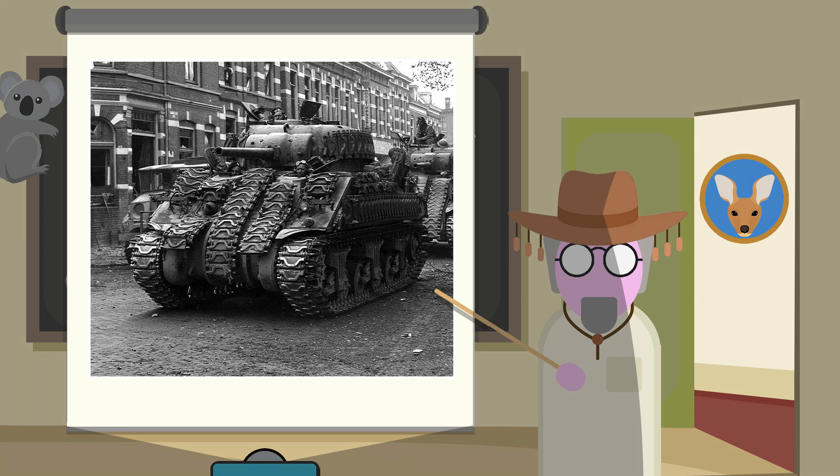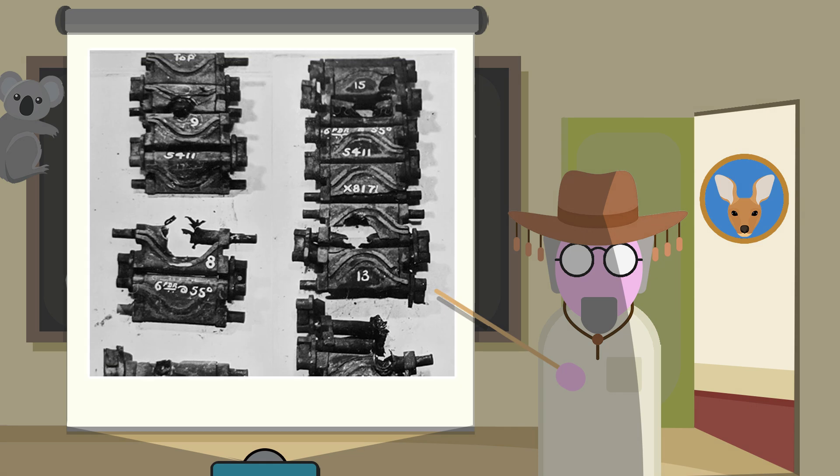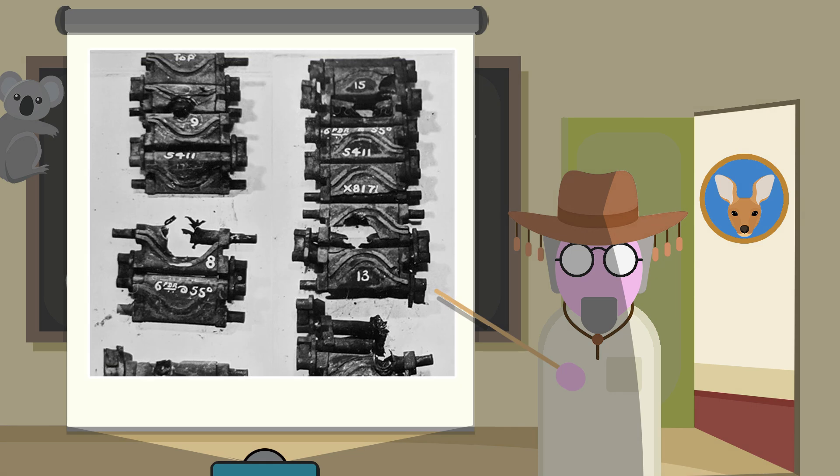Most commonly seen were sandbags and track links. In tests, the track links were shown to increase the protection by about 14% in total, and it was found that the type of track, the angle at which it was placed, and the protection it offered varied widely, with Sherman track, for example, proving much more successful than the Churchill type track.